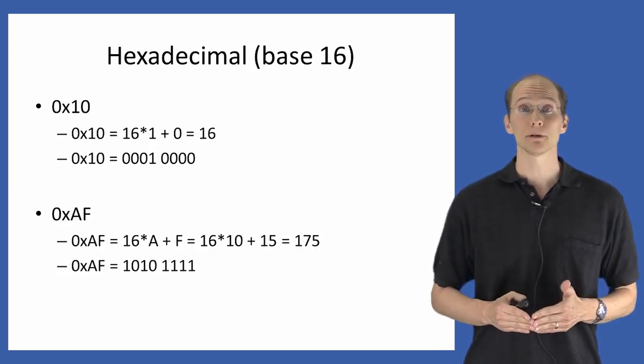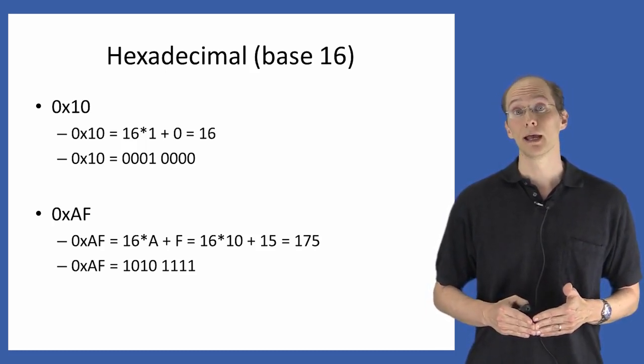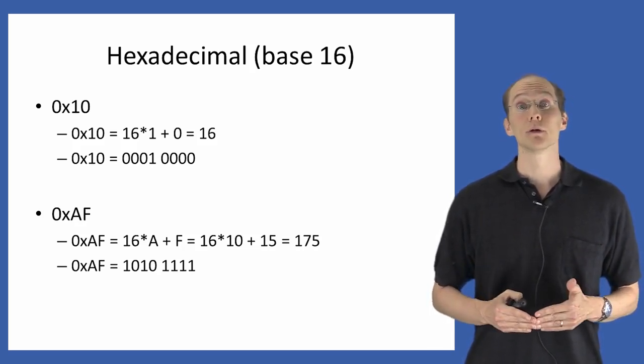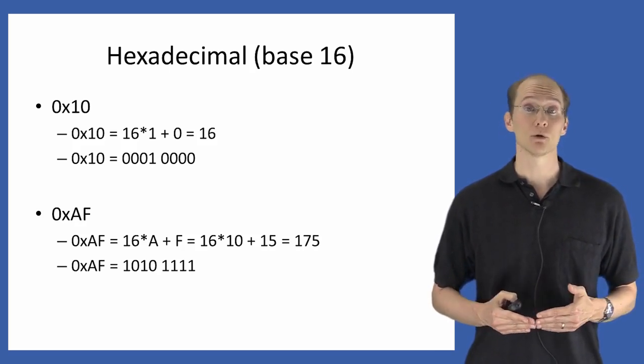Just as a second example, I have the hexadecimal number AF. AF is equal to, or has value, 16 times the value of A plus the value of F times 1.